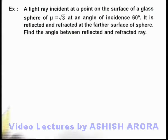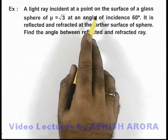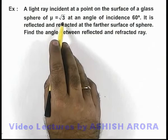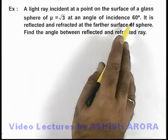In this example, we are given that a light ray is incident at a point on the surface of a glass sphere of refractive index √3 at an angle of incidence 60 degrees.